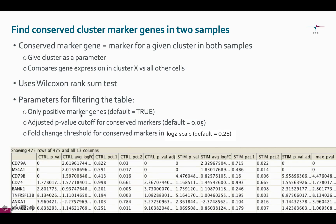By default only the positive marker genes are reported — that is, genes that are more highly expressed in the cluster in question compared to the other cells. The adjusted p-value for both samples needs to be lower than 0.05 by default.